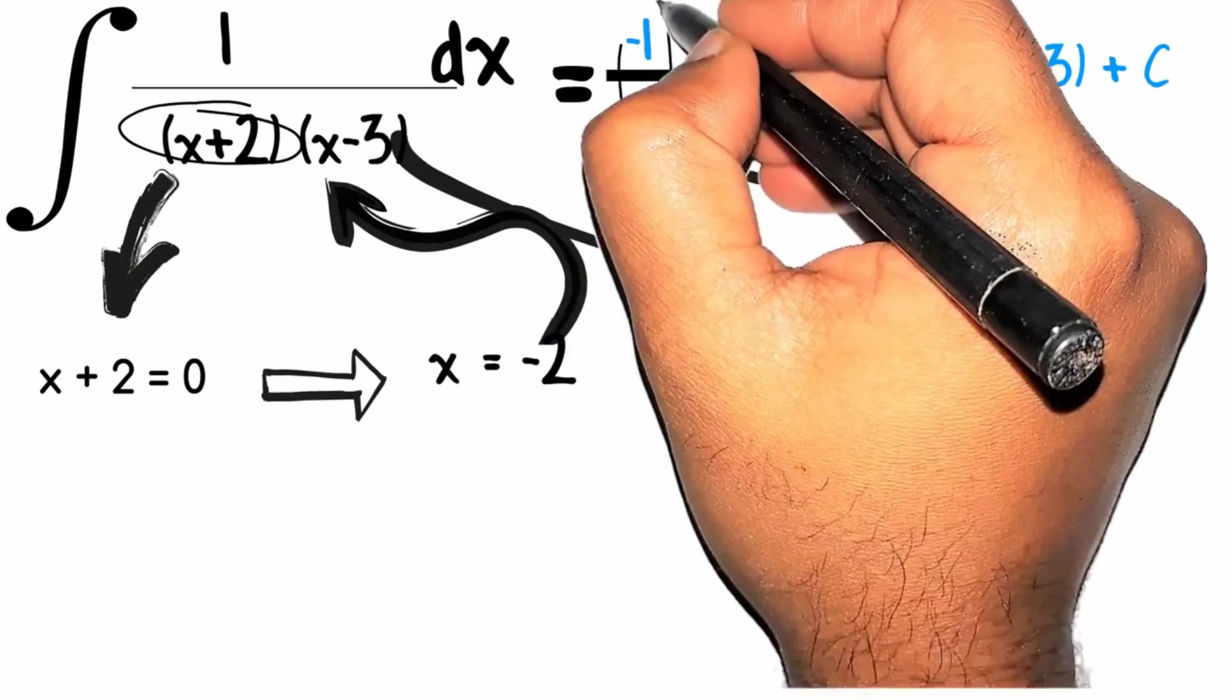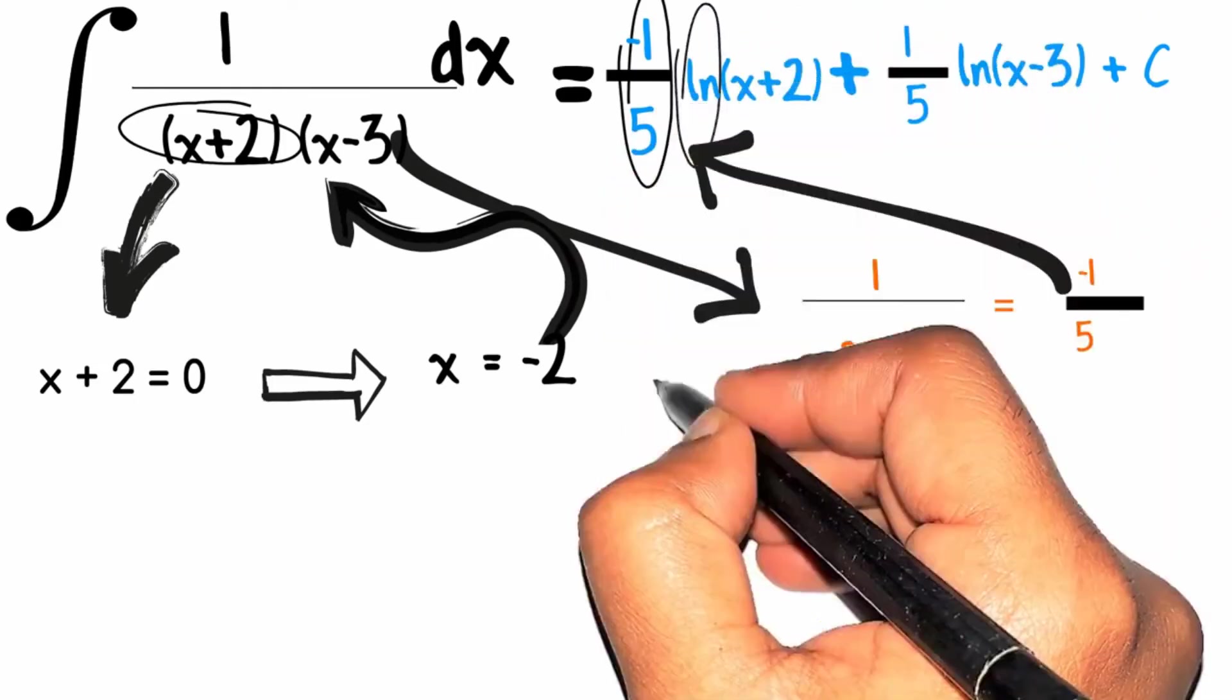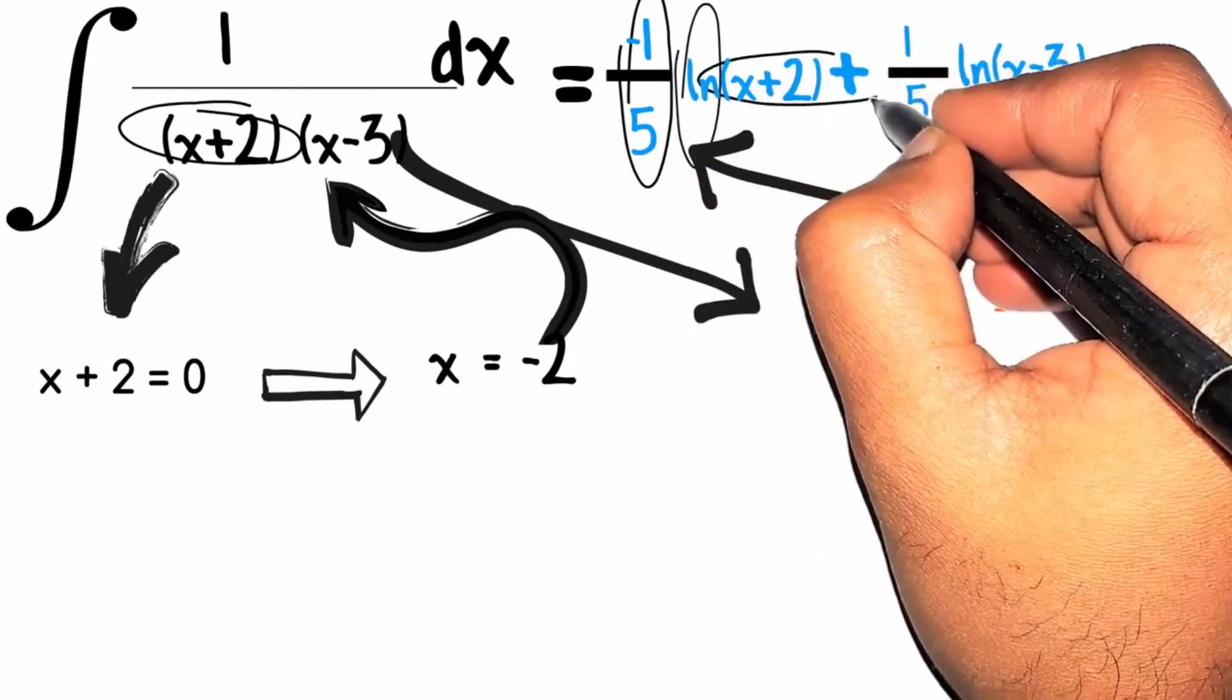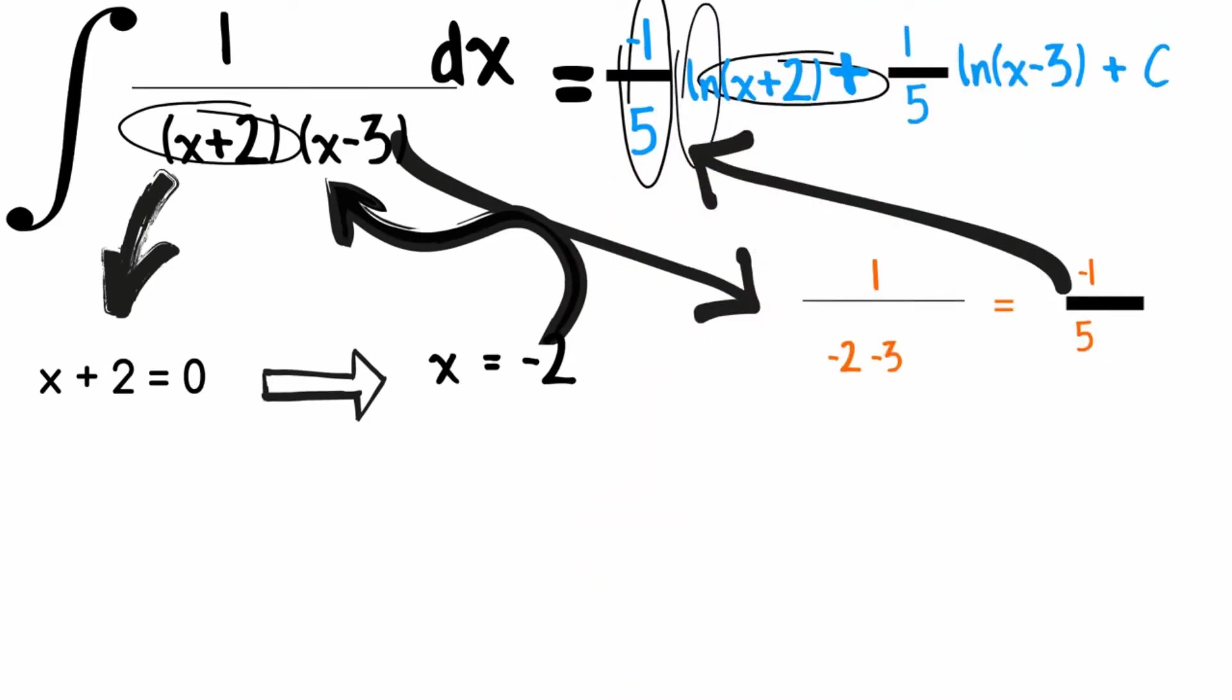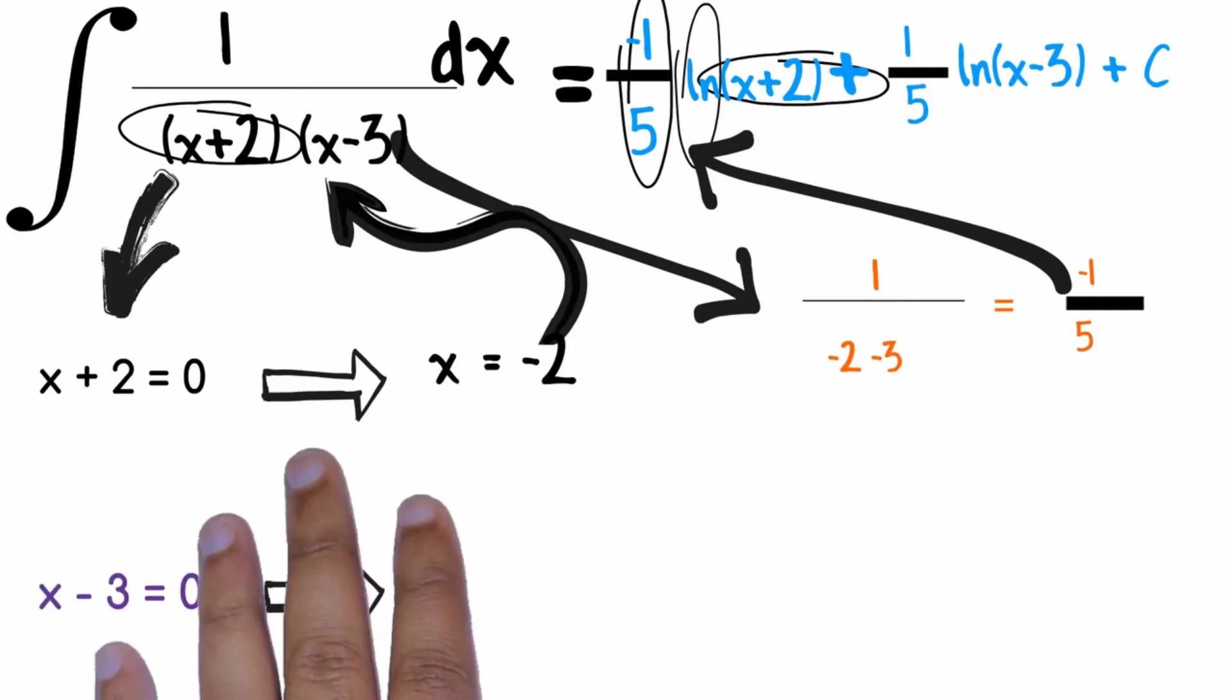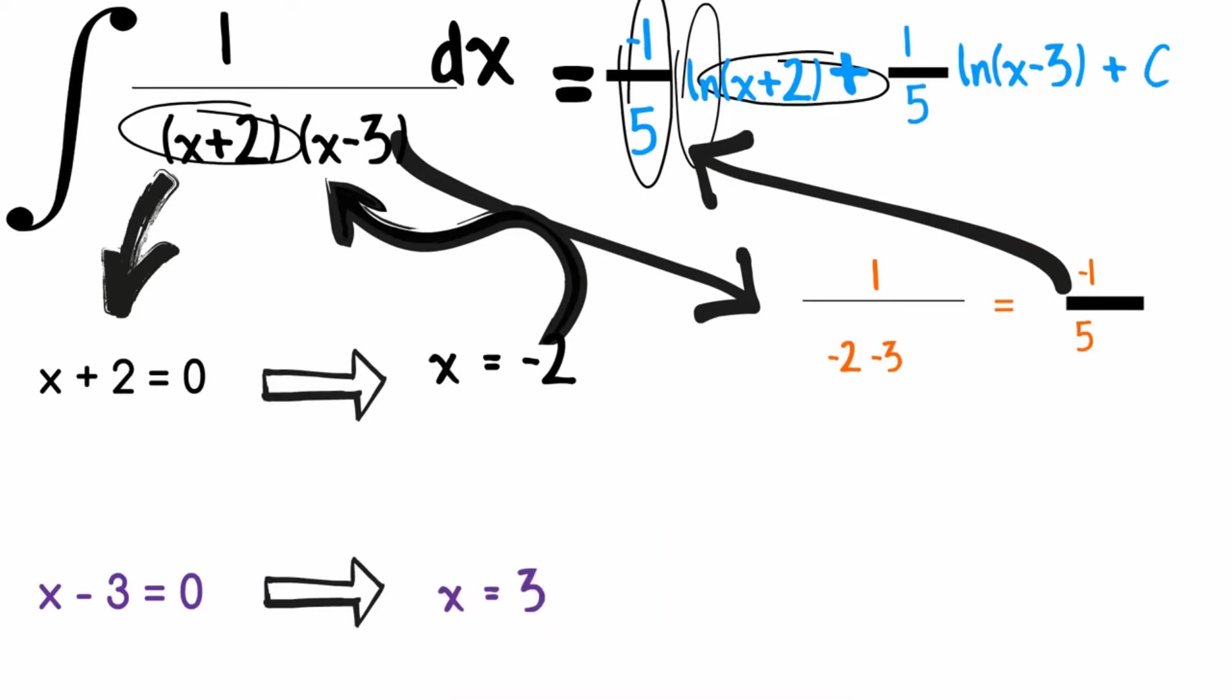So this will be our first coefficient. Then we will write ln then x plus 2. Then we will write plus and then take another factor and put it equals to 0. And then solving for x will give us 3.